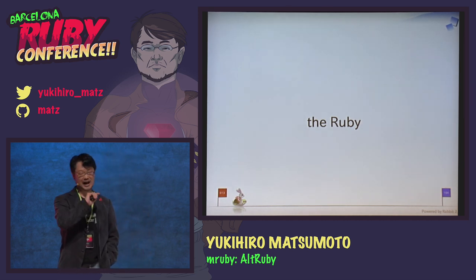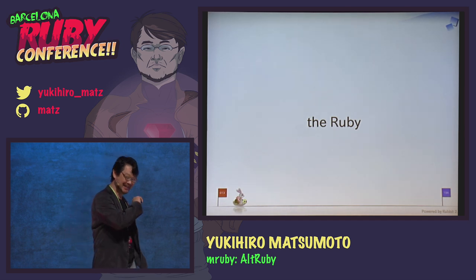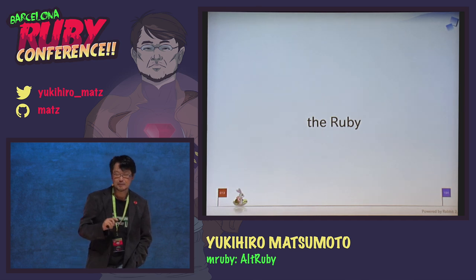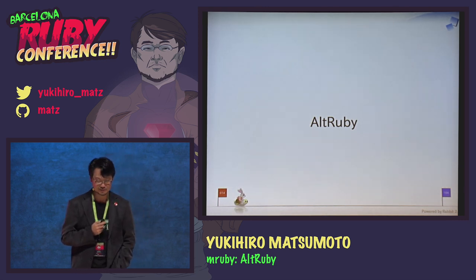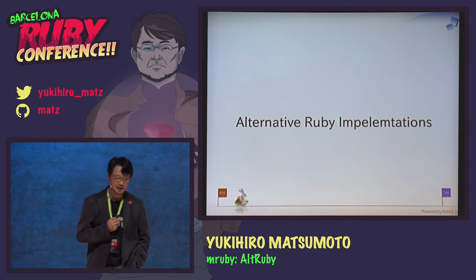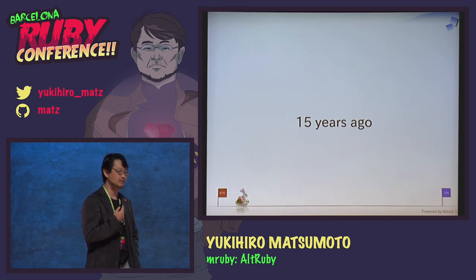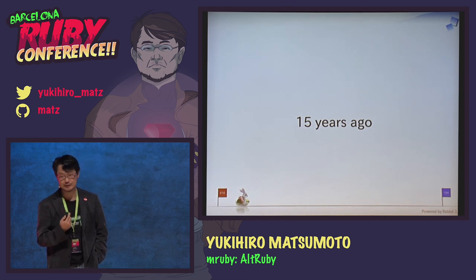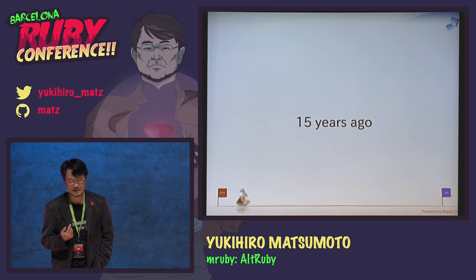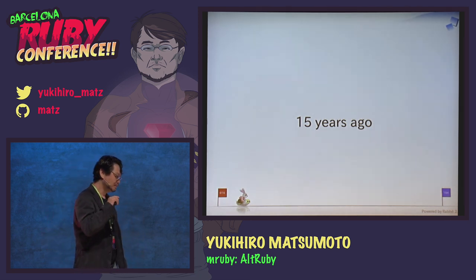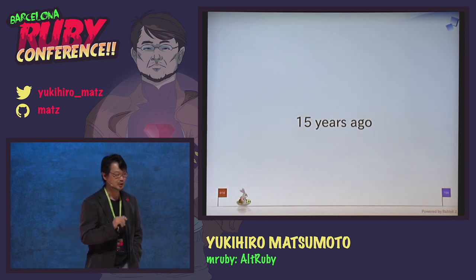CRuby is the Ruby most of you think of. But we have some different implementations I call ArubyI — Alternative Ruby Implementations. About 15 years ago, there was no alternative implementation of Ruby and no alternative implementation of Perl. We had Python and JPython back then. Many people claimed Ruby's syntax is too complex to implement alternatively.